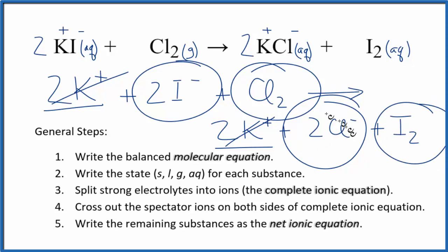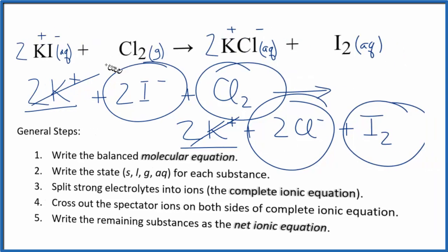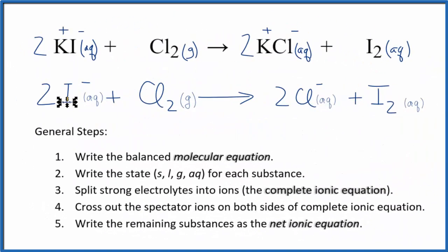So this is the net ionic equation for potassium iodide plus chlorine gas. I think the only kind of odd thing here is this I₂. It is dissolved in the water, but it's not a strong electrolyte, so we're not going to split it apart.